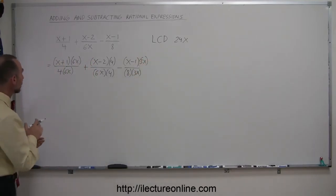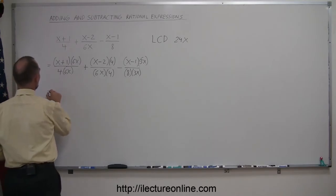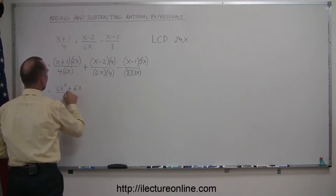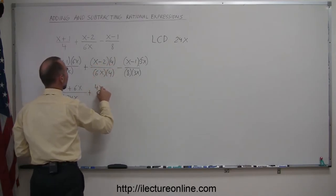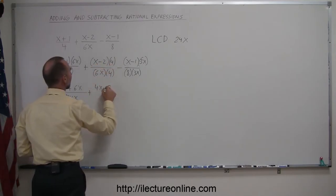So now we go ahead and multiply these out. So this is equal to 6x times that is 6x squared, plus 1 times 6x is 6x, divided by 24x, plus 4 times x is 4x, 4 times negative 2 is minus 8, divided by 24x.